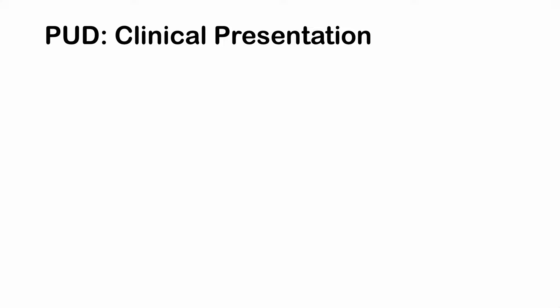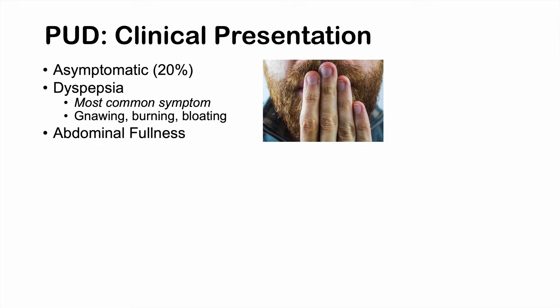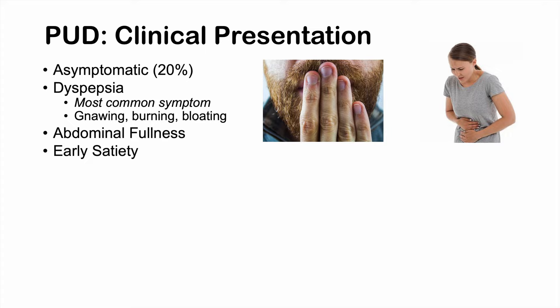Regarding clinical presentation, it's important to note that 20% of patients with peptic ulcer disease are asymptomatic. The most common symptom is dyspepsia — an epigastric sensation described as pain, discomfort, gnawing, burning, or bloating. Epigastric refers to the area in the center of the abdomen above the belly button. Patients can also describe a sensation of fullness and early satiety, where they feel full very quickly after starting to eat.